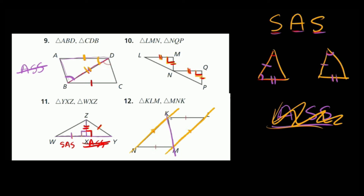We have our two parallel lines being cut by a transversal. Whenever you have two parallel lines cut by a transversal, they create special angles. In this case, the alternate interior angles are congruent — so this angle right here and this angle right here are congruent, simply because we know these two lines are parallel.